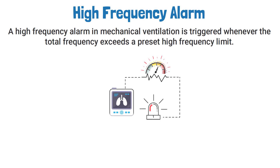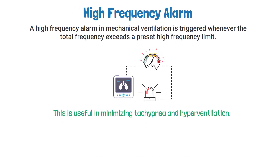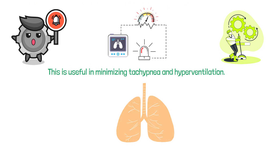A high frequency alarm in mechanical ventilation is triggered whenever the total frequency exceeds a preset high frequency limit. This is useful in minimizing tachypnea and hyperventilation. The activation of this alarm can occur whenever auto-triggering is present due to an incorrect sensitivity setting, or it can be a sign of respiratory distress.